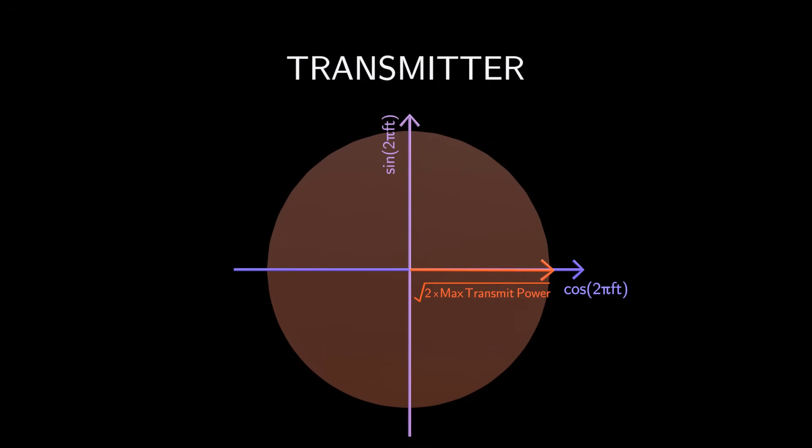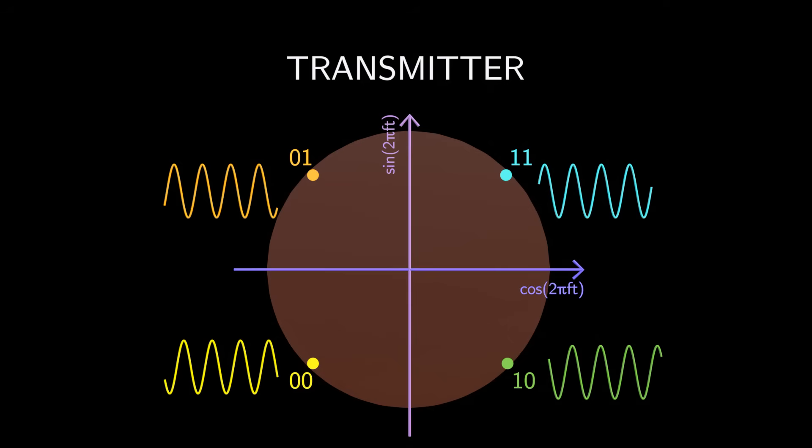So to reduce the probability of error, the transmitter can fit constellation points as far apart as possible within this circle. Additionally, if there's less unpredictable interference and noise, then we can pack more bits into the same signal, boosting our spectral efficiency.